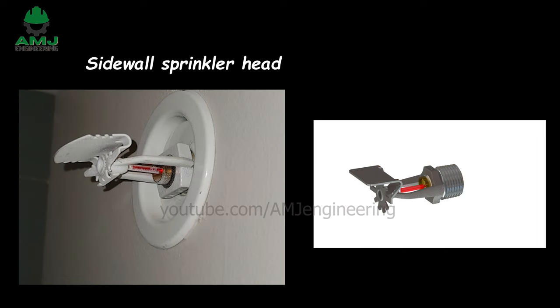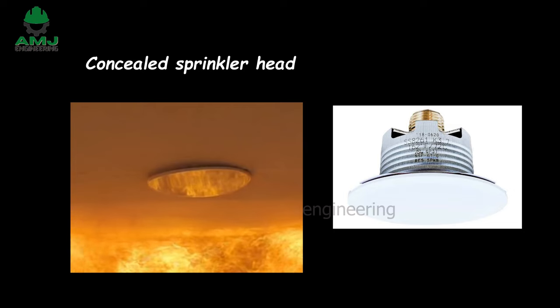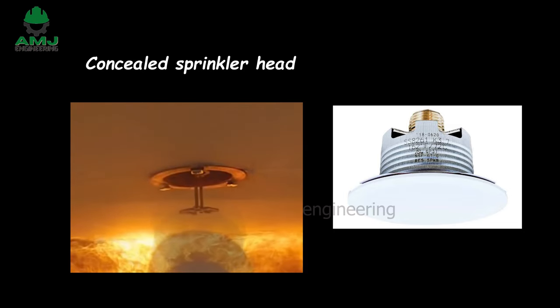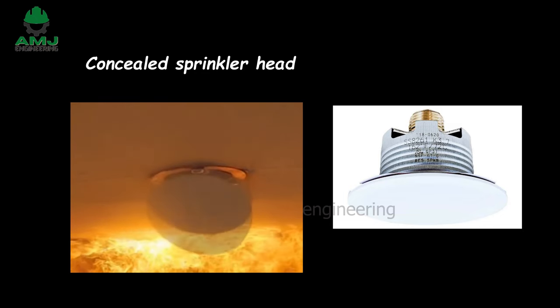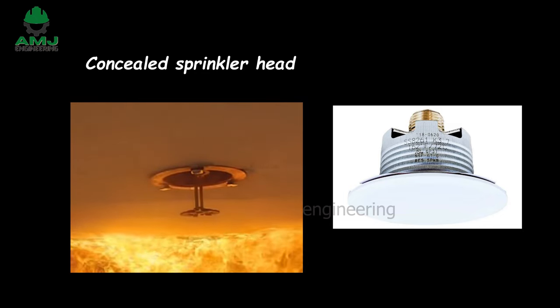Sidewall sprinkler heads protrude horizontally out of the wall parallel to the floor, rather than descending from the ceiling or mounted on a pipe pointing upward. Sidewall sprinklers are ideal for small spaces such as hallways, spaces with obstructions, and where ceiling piping is not available. Concealed sprinkler head: a heat-sensitive plate detaches at temperatures roughly 20 degrees lower than the sprinkler head, allowing the concealed sprinkler's deflector to drop and the head to activate.